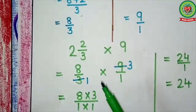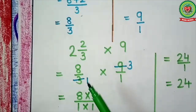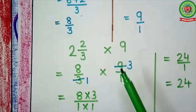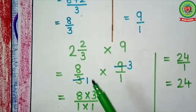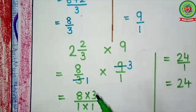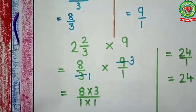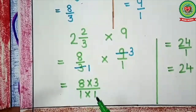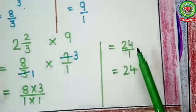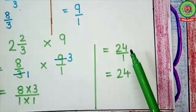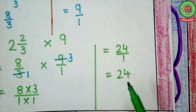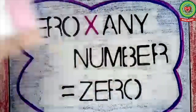Now Step 2: cutting. Here 8 and 3, cutting is not possible. Now see 3 and 9, cutting is possible — 3 ones are 3, 3 threes are 9. And as we know, we will not check cutting by 1. So it will come 8 multiplied by 3 upon 1 multiplied by 1. 8 threes are 24, so it will come 24 upon 1. The answer is 24.